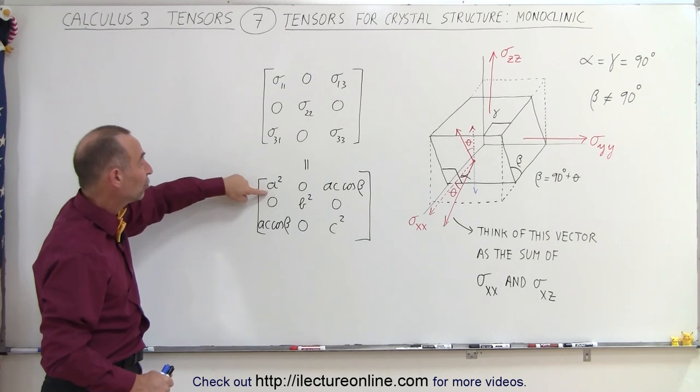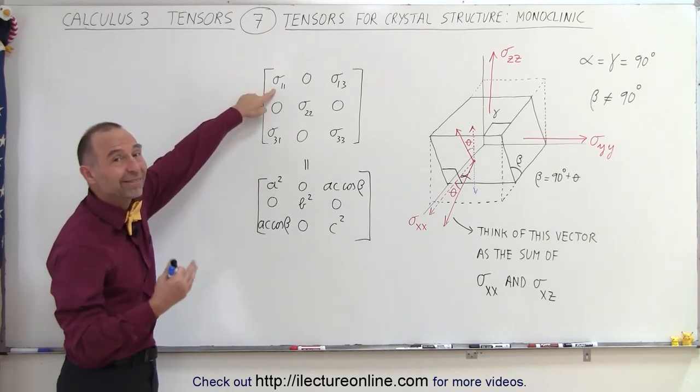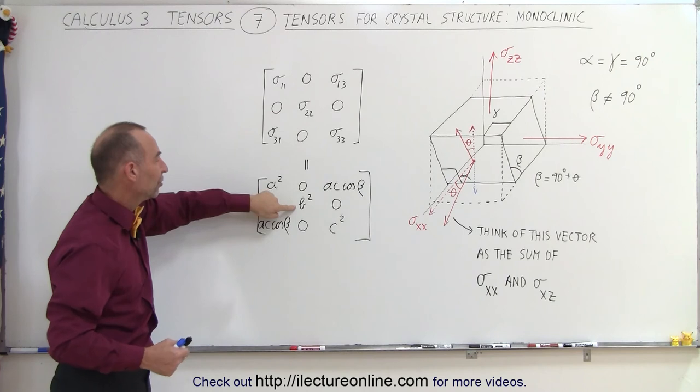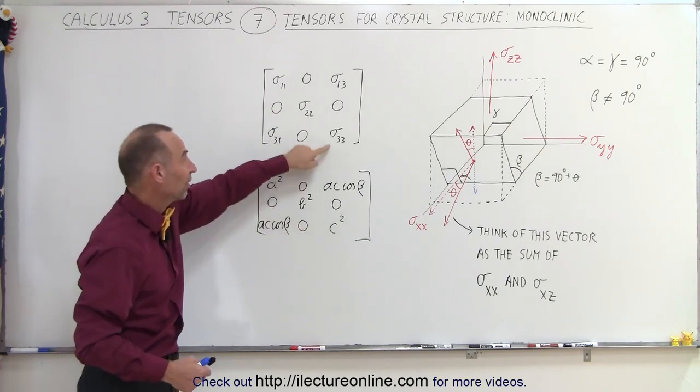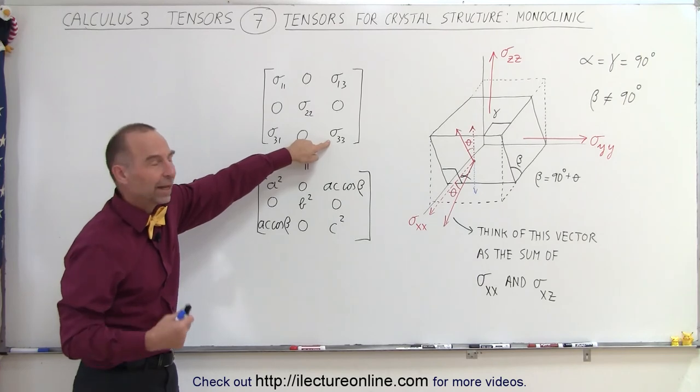But notice that a squared basically means sigma 1,1, basically means sigma x,x. B squared means sigma 2,2 or sigma y,y. And c squared represents sigma 3,3 or sigma z,z. And these two components simply represent the rotation about the y axis.